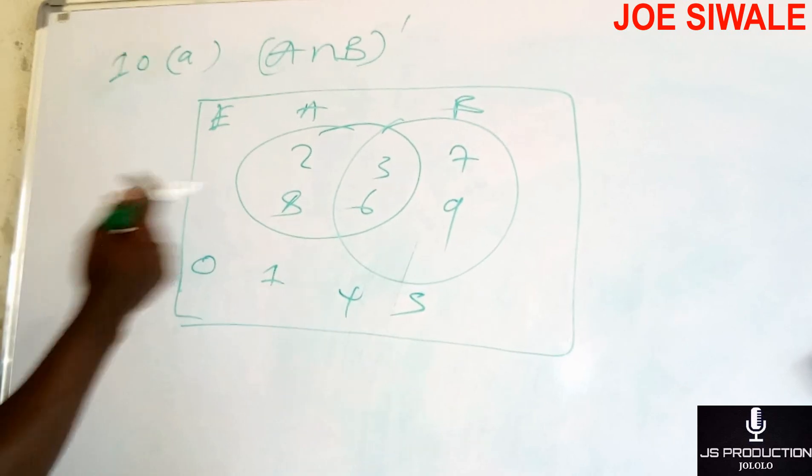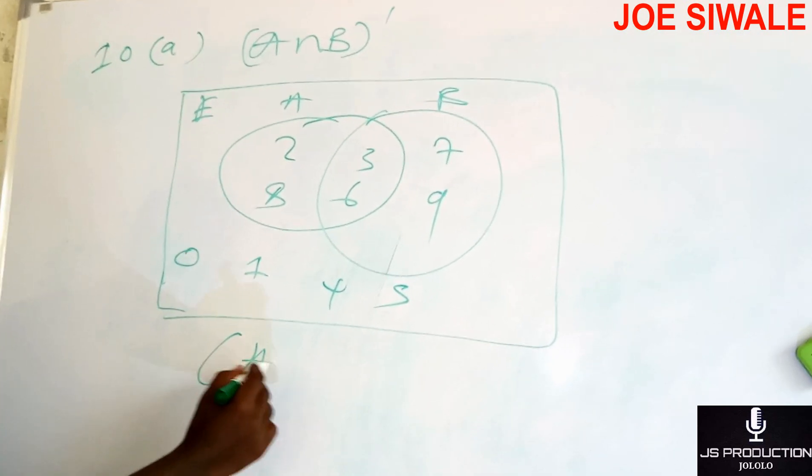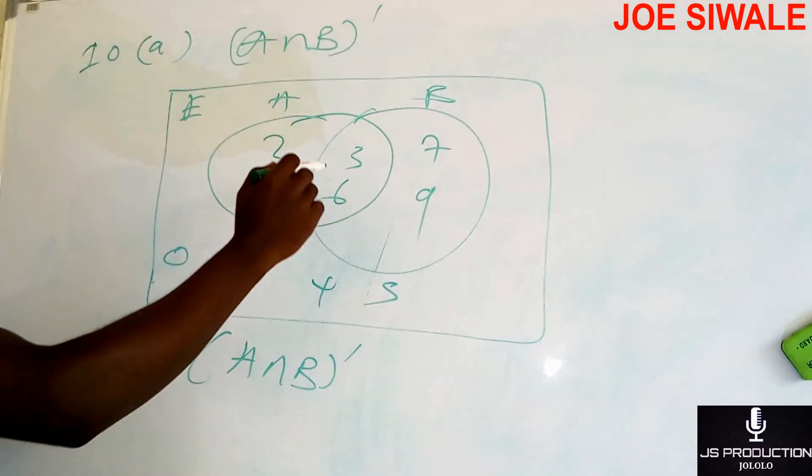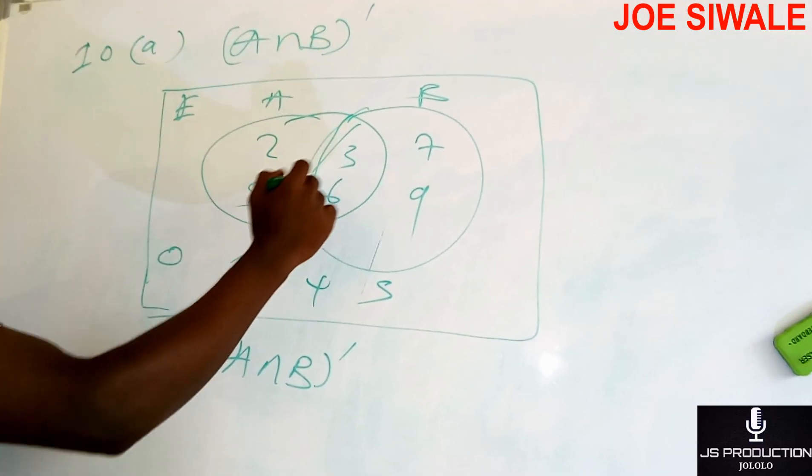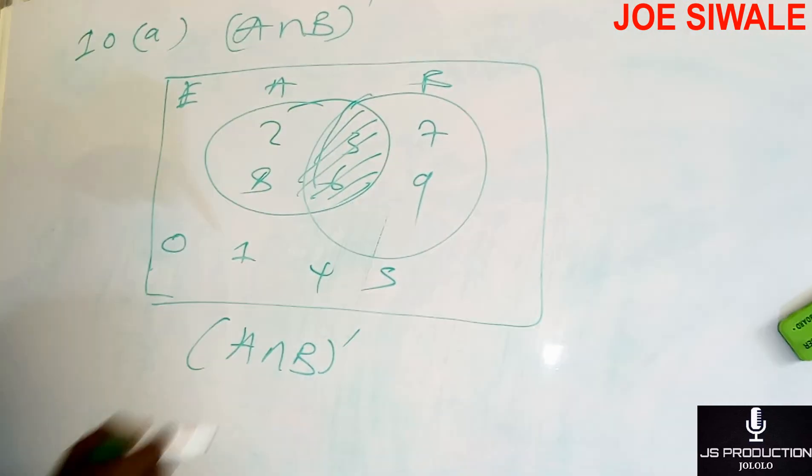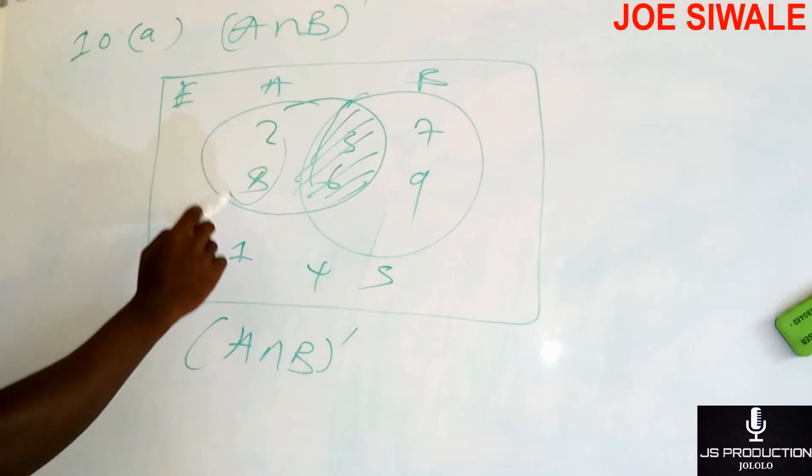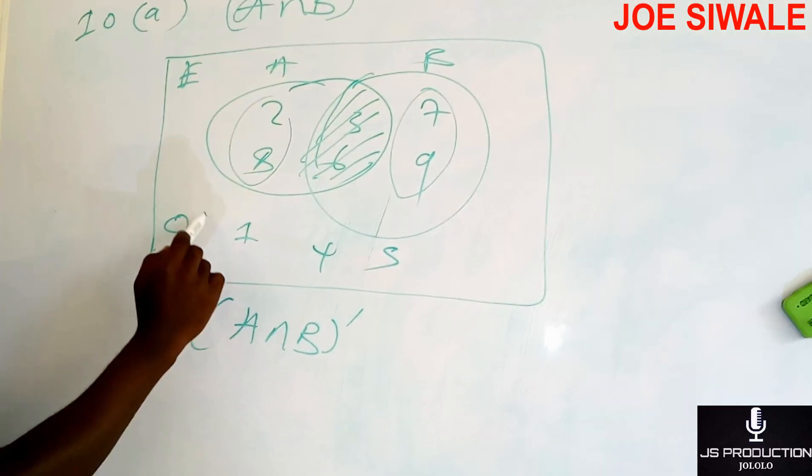So for me to calculate A intersection B complement, I'm not supposed to touch this part. So it means I'm going to list these numbers that I've just circled.